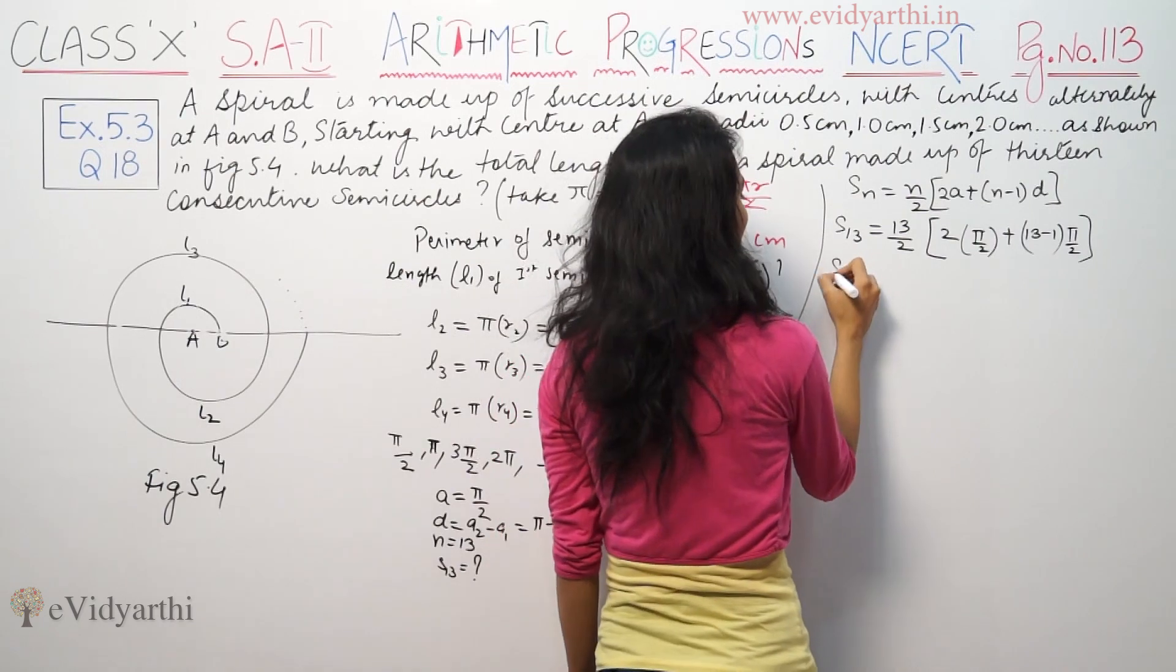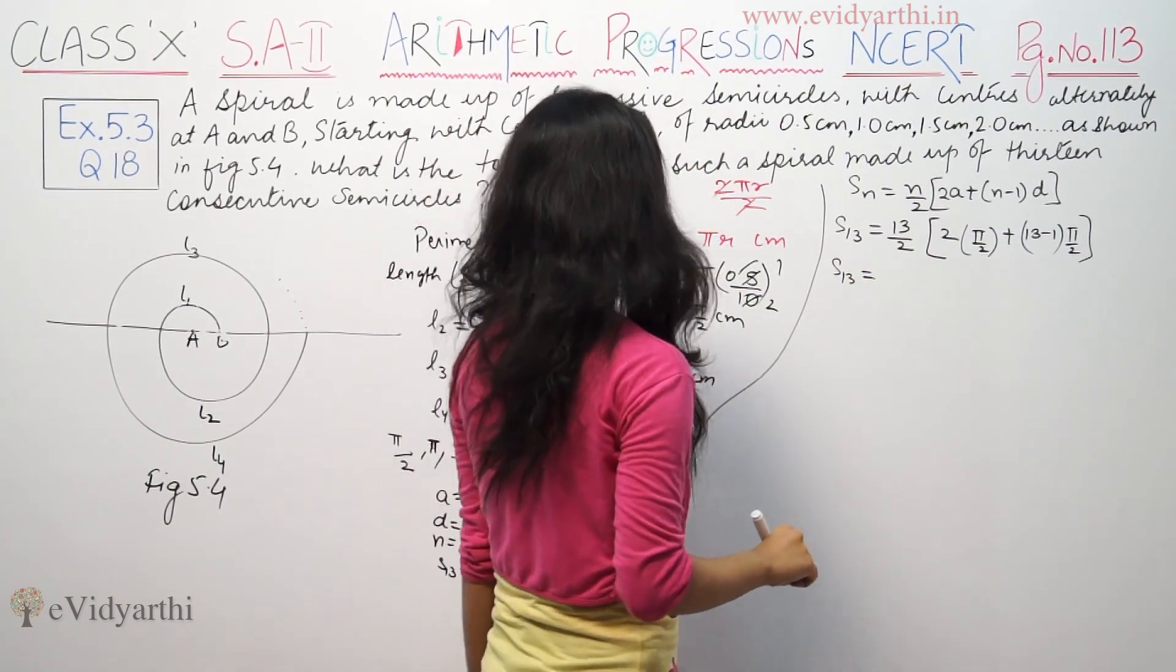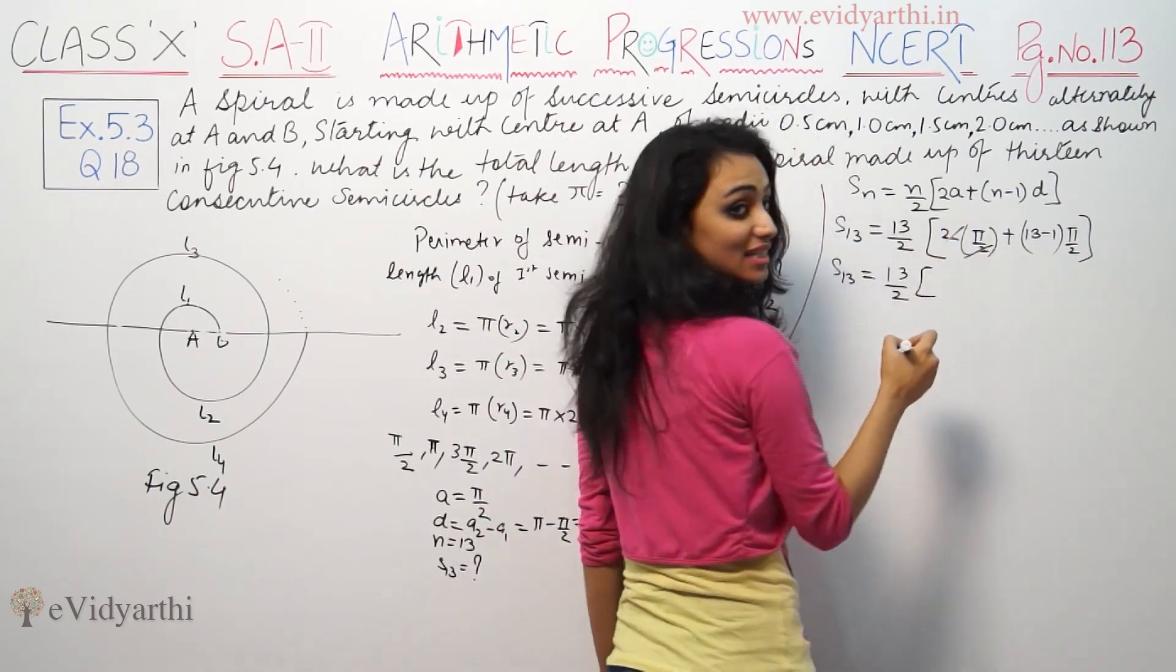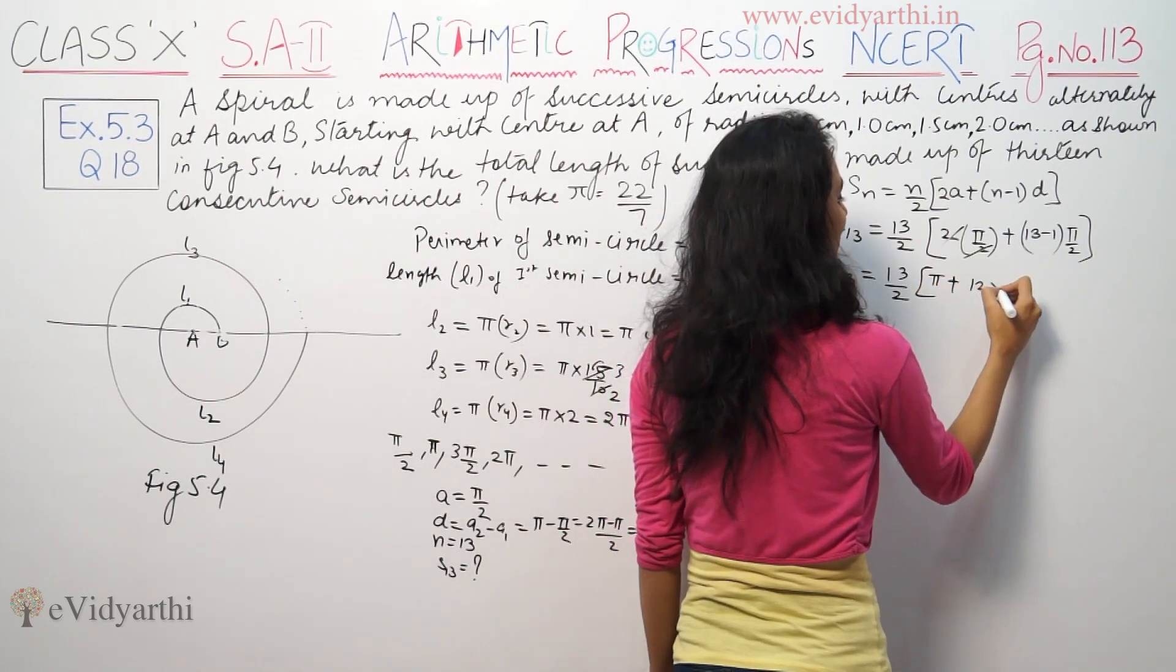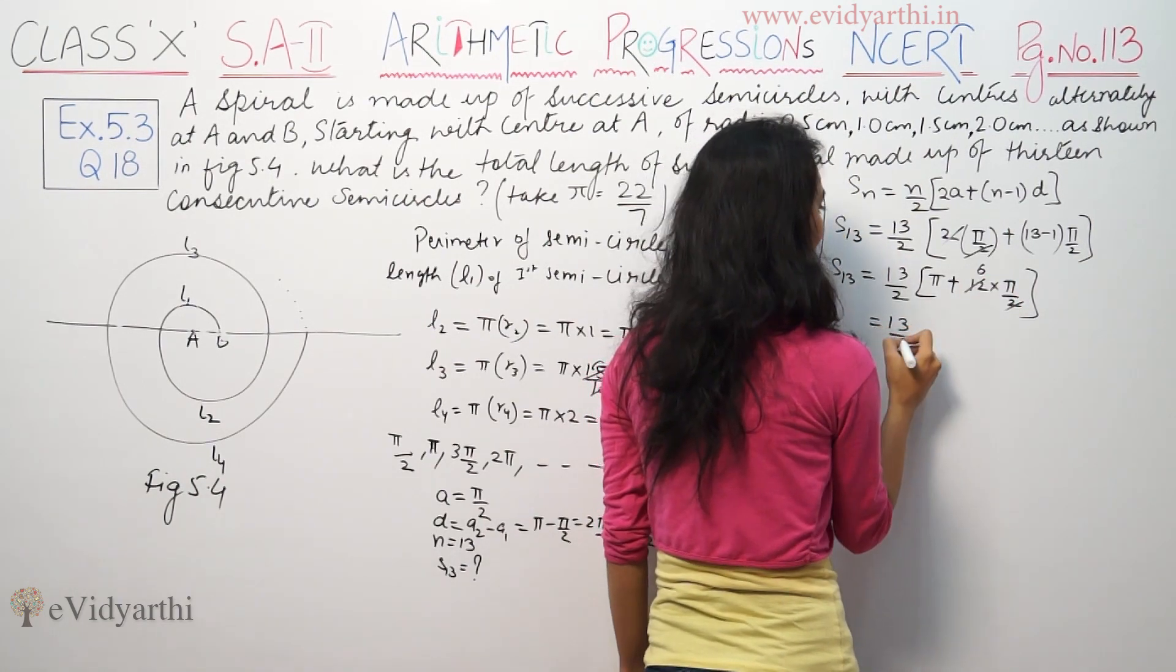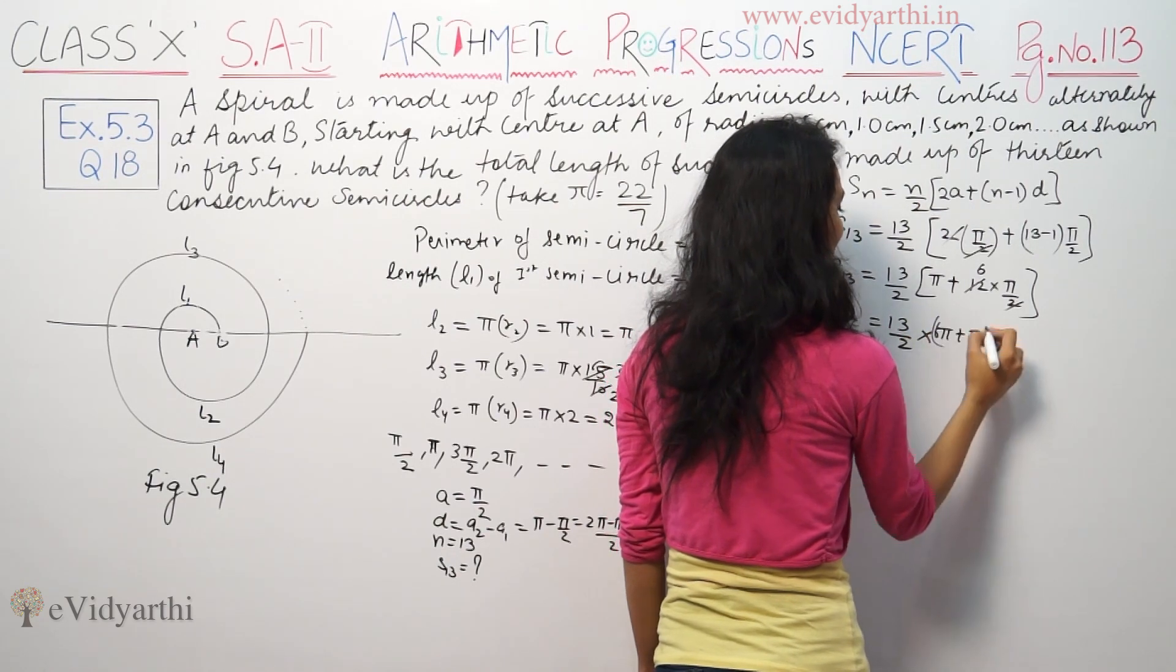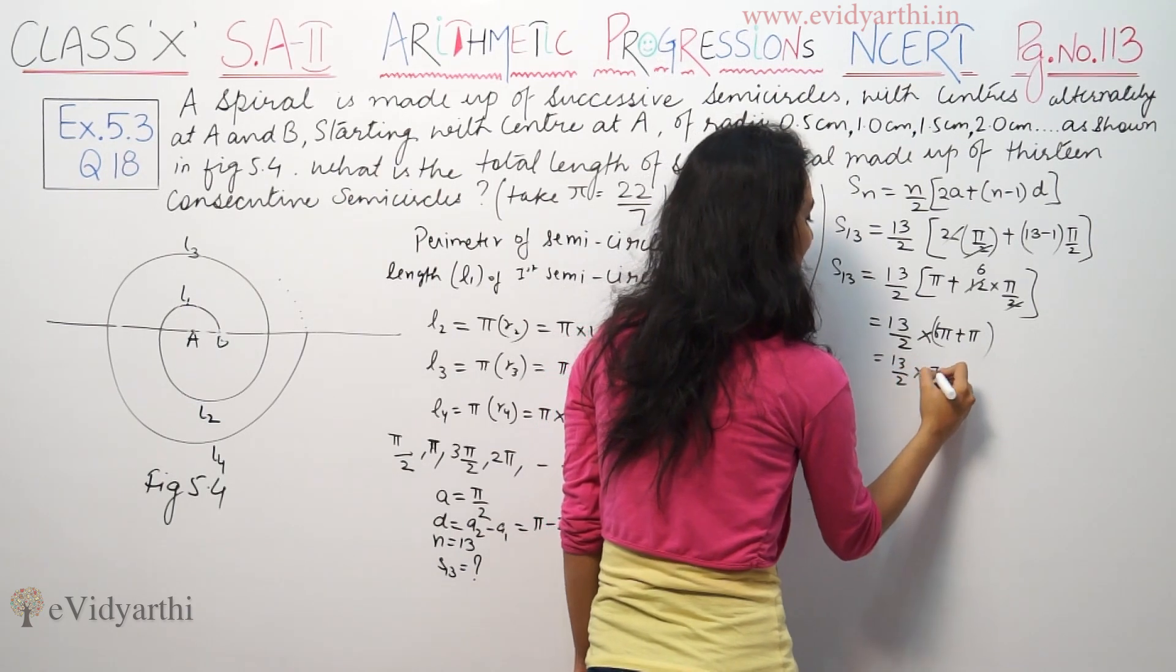So now S13 = 13/2 × [2a + (n-1)d]. These are cancelled. So π/2 plus, 3 minus 1 is 12 into π/2. So 3/2 into π plus 6π, so 3/2 into 7π.